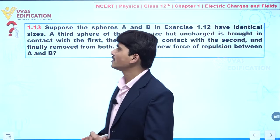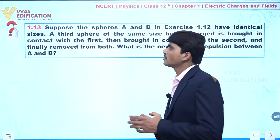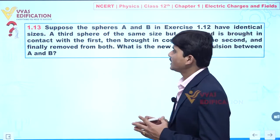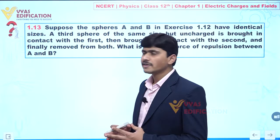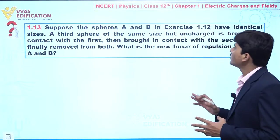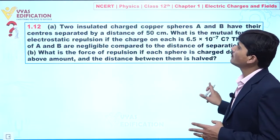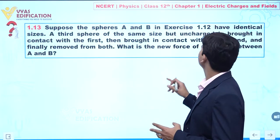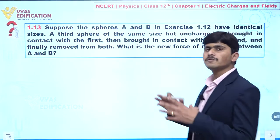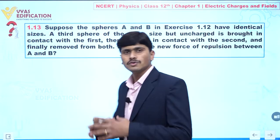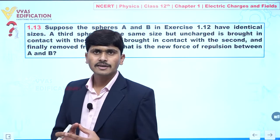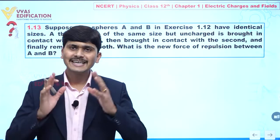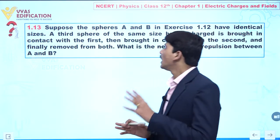We are going to solve question number 1.13. In this question, it is given that suppose sphere A and B, which we already solved in this question, have identical sizes. Let's suppose we have two spheres and both are having identical sizes.